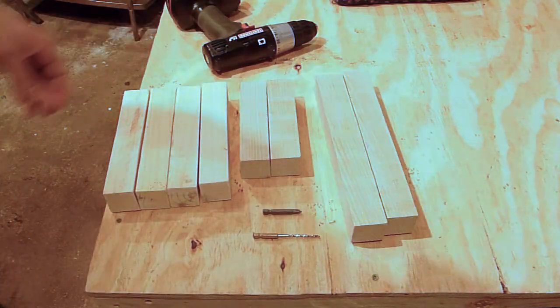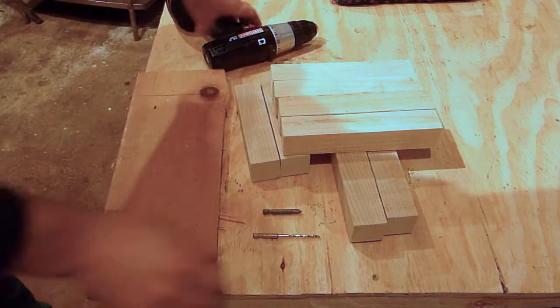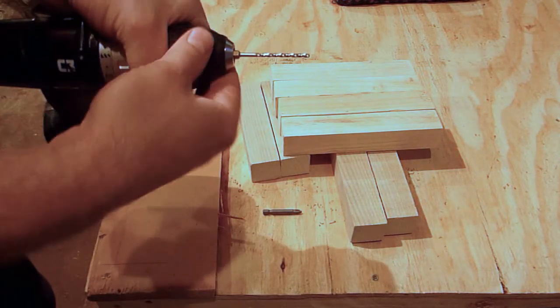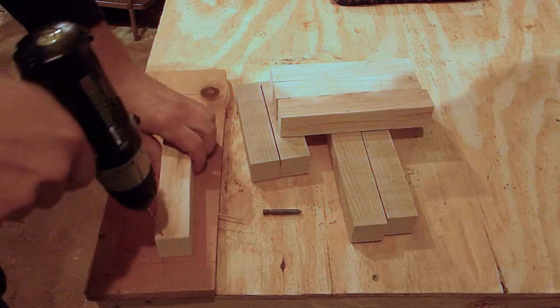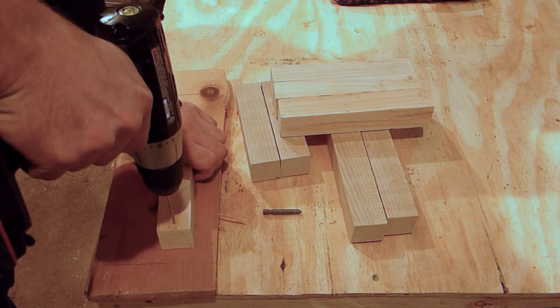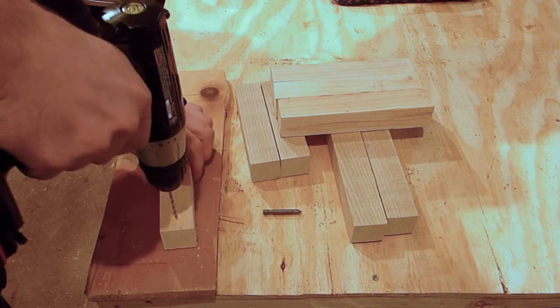Now the first step is to pre-drill the legs for assembly. You're going to want to drill about a quarter inch from the end all the way through. And then about a half an inch and flip it 90 degrees and then about a half an inch all the way through.